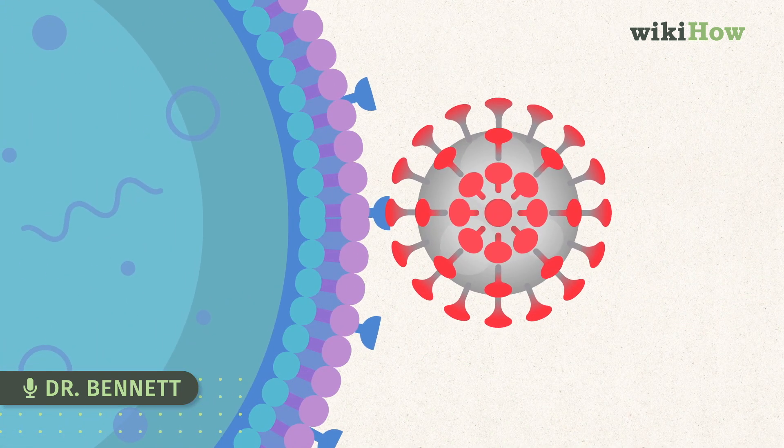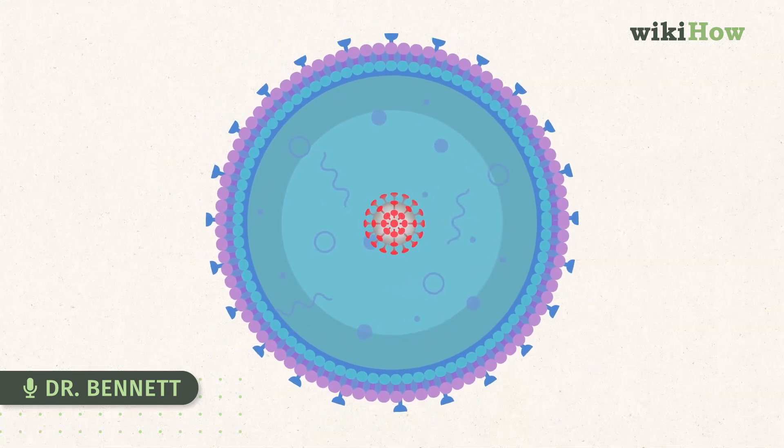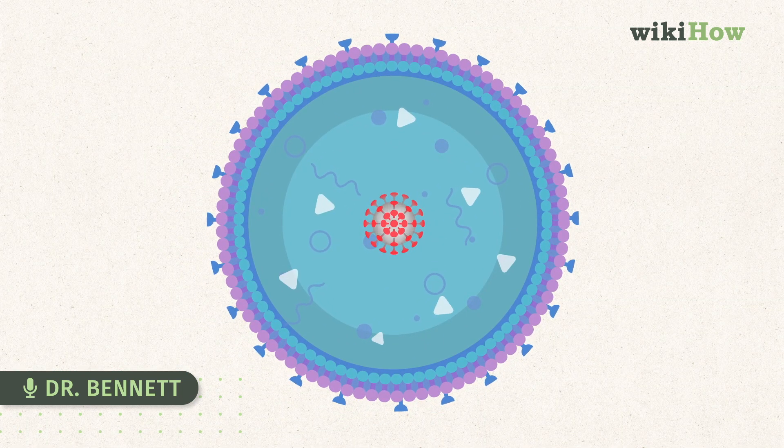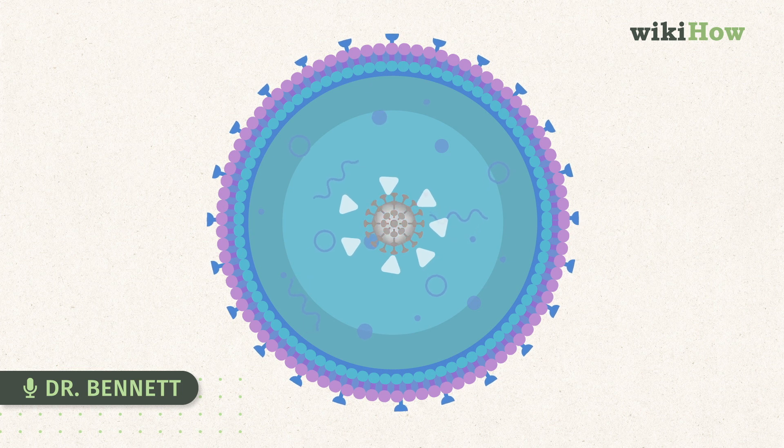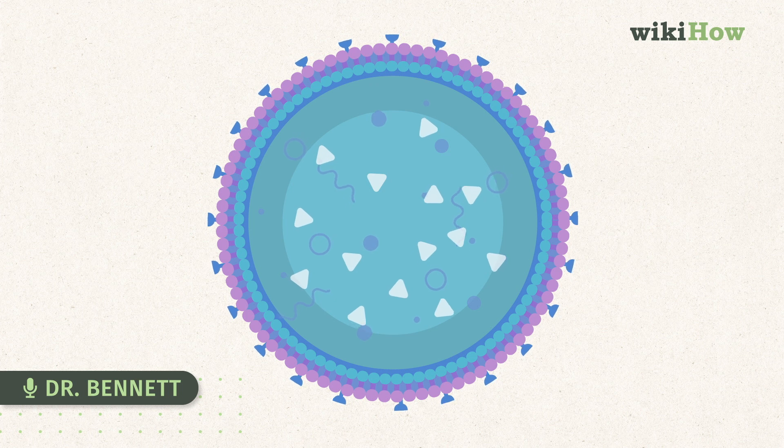When we're infected with a virus or another agent, our body will mount an immune response. We call it the adaptive immune response. And one of the components of that immune response is the production of antibodies that are specific to that pathogen or specific agent.